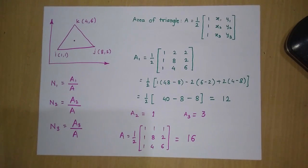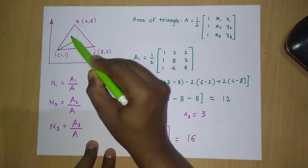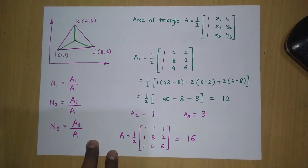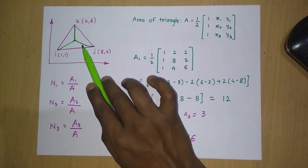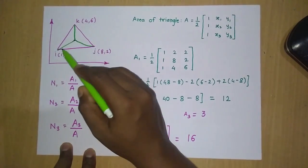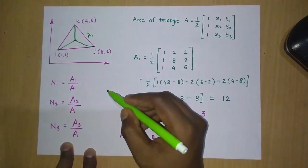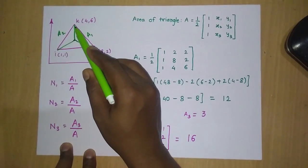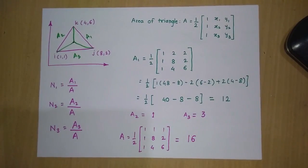First, we join point P to each of the three nodes. After joining point P to all three nodes, the triangle is divided into three smaller triangles. The first triangle, in front of node i, has area A1. In front of node j there is area A2, and in front of node k there is area A3.